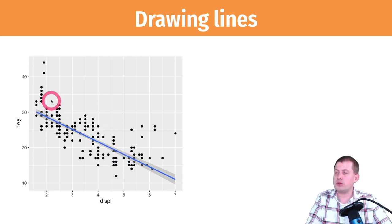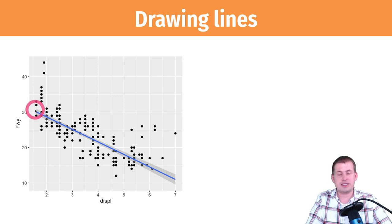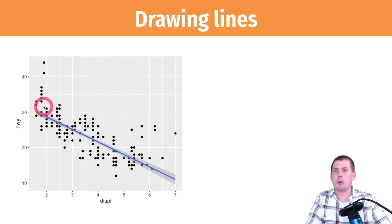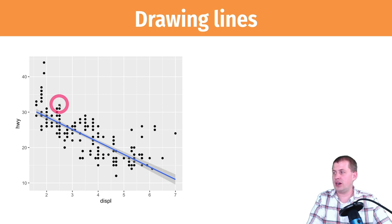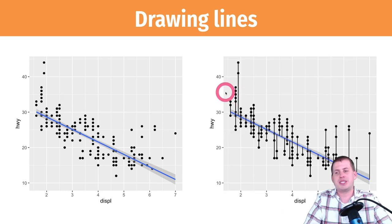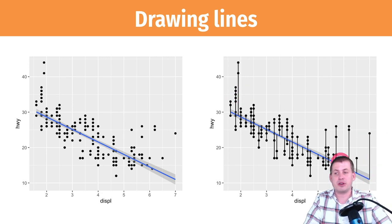What the computer does is it finds a point, draws a smaller line down to the best-fit line, calculates that distance, and does that for every single point to determine if that is the smallest number possible. If you can get the smallest sum of the squared distances, that's going to be your best-fit line. You have some dots that are really far away from the line, but also some that are right on top of it.